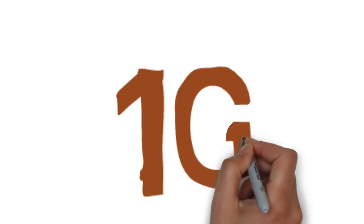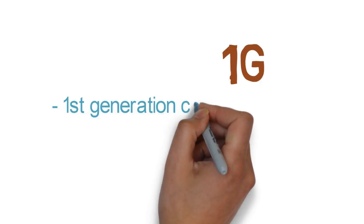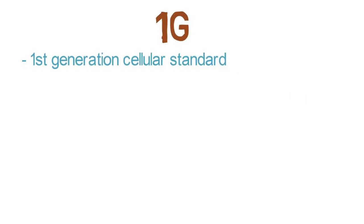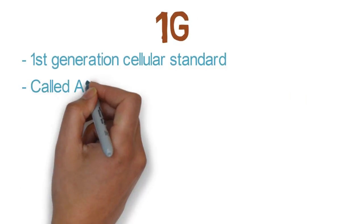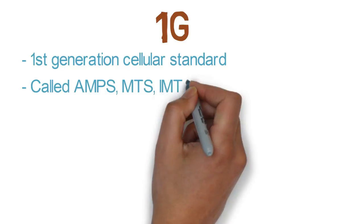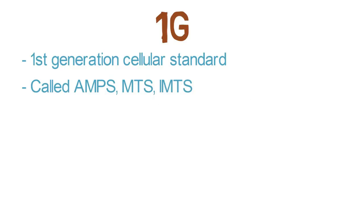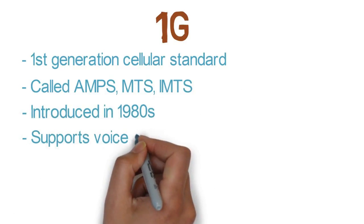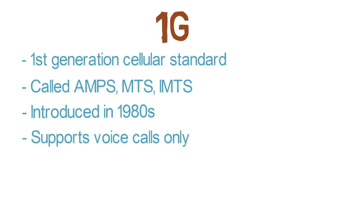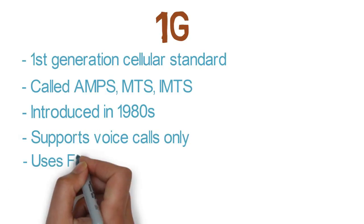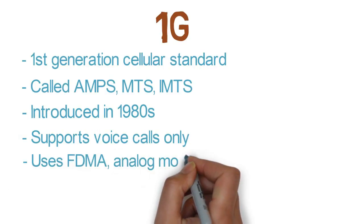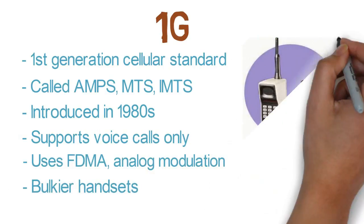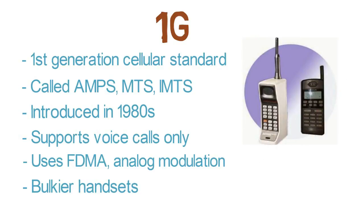Initially, it was 1G. 1G is a first-generation cellular standard called by different names like AMPS, MTS, and IMTS. It was introduced in the 1980s and supports only voice services over a limited range. It employs analog modulation technique with FDMA. 1G handsets were bulkier with an antenna on top of the device.